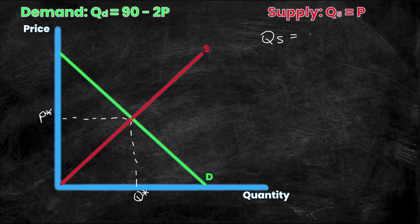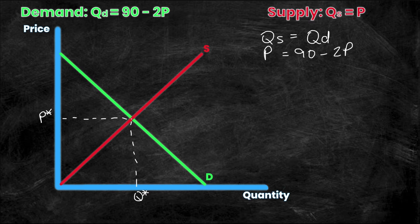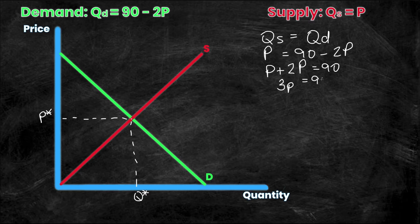Setting Qs equal to Qd, with both equal to Q*, we effectively have the equation p equals 90 minus 2p. I'm going to put all the p's on one side and all the constants on the other, moving the 2p over to the left side: p plus 2p equals 90. One p plus 2p is simply 3p, which equals 90. To isolate for p, I'll divide both sides by 3.